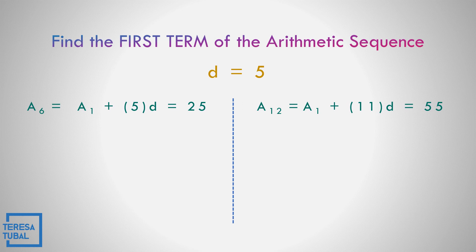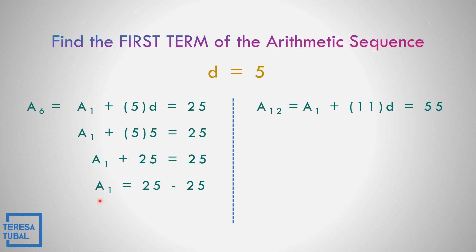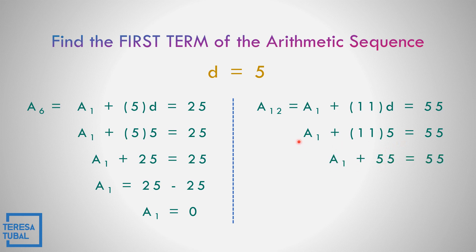Replace d equals 5 into the first equation: a sub 1 plus 5 times 5 equals 25, so a sub 1 plus 25 equals 25, giving a sub 1 equals 0. Checking with the second equation: a sub 1 plus 11 times 5 equals 55, so a sub 1 plus 55 equals 55, giving a sub 1 equals 0. The first term is equal to 0.